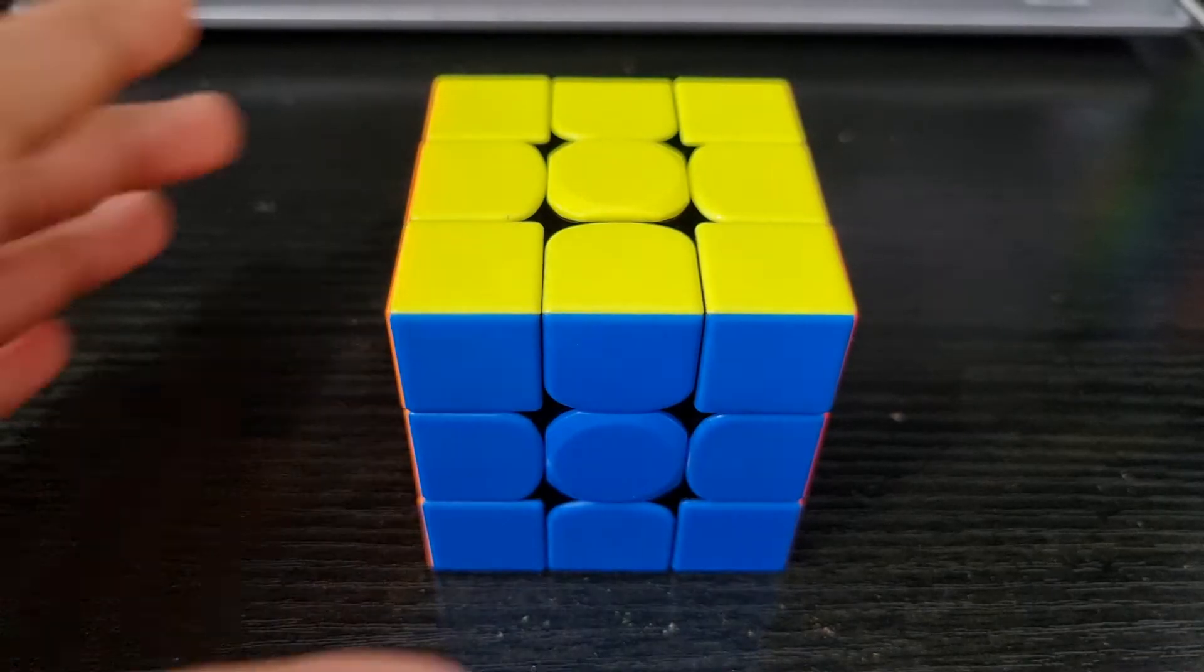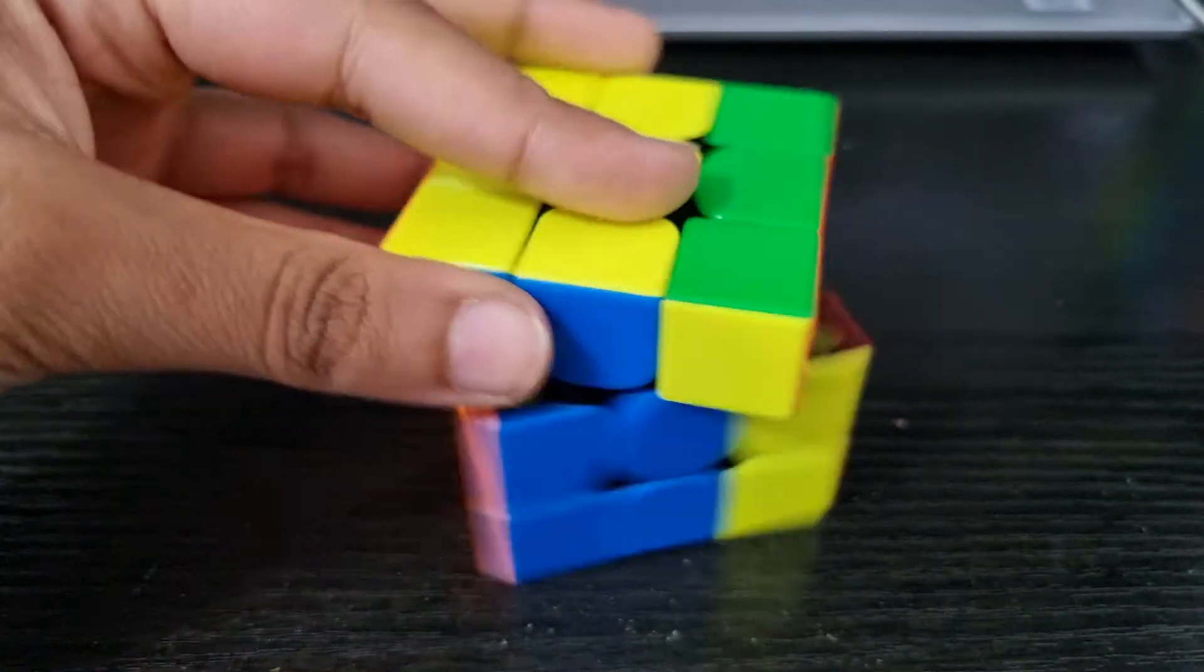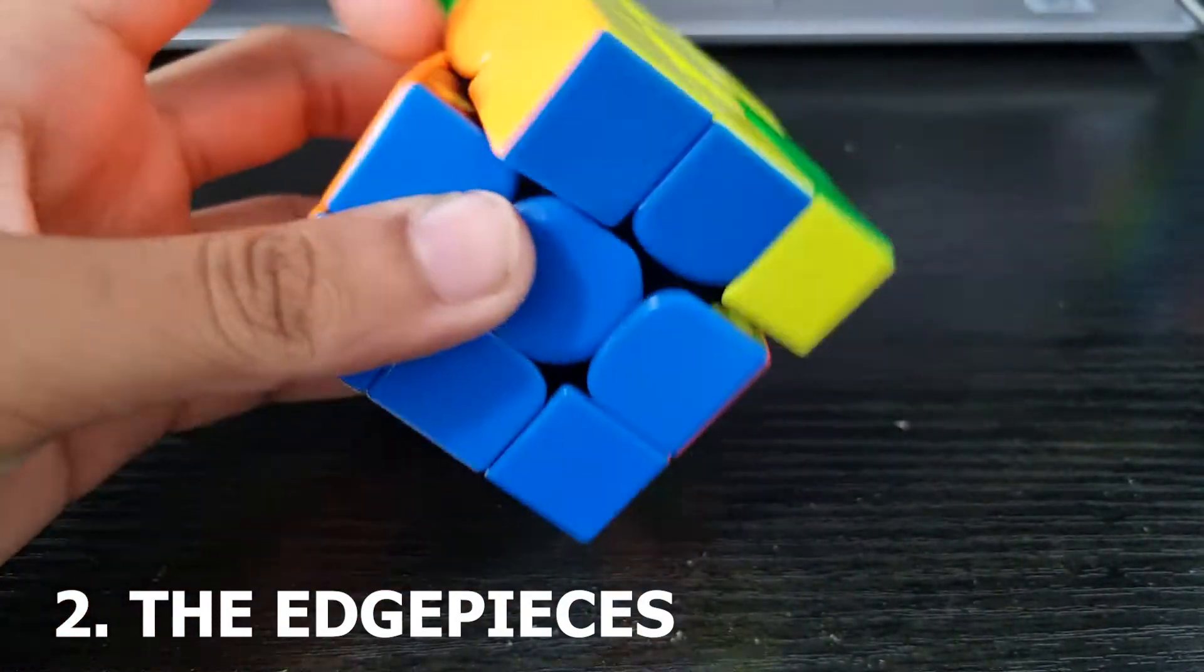The edge piece has two different colors. They move around the entire cube. There are 12 edge pieces in the puzzle.